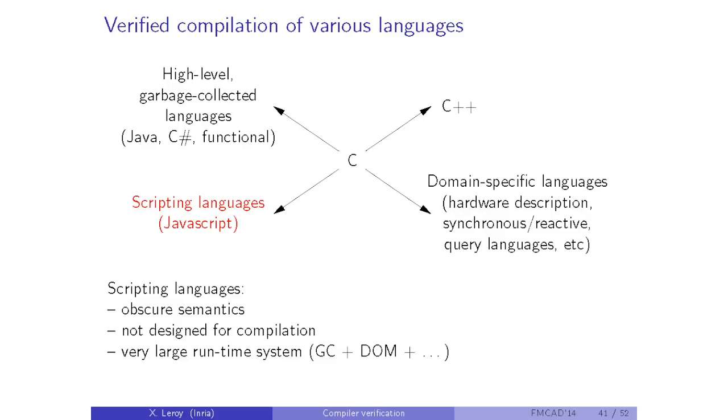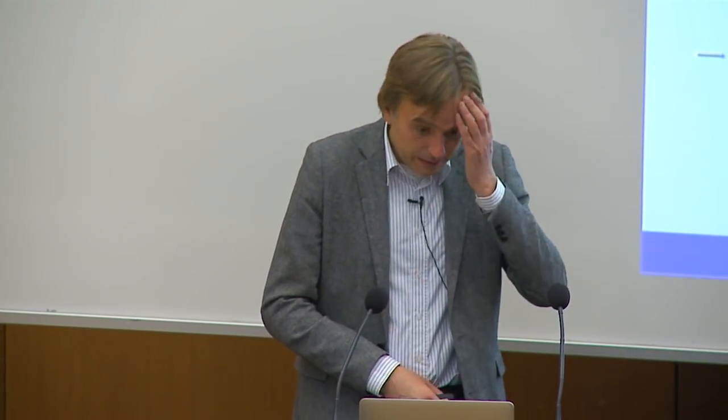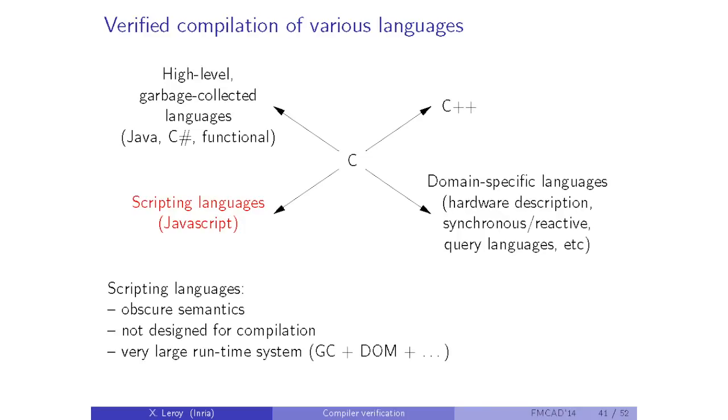Scripting languages like JavaScript are worse: their semantics are obscure, the language was not designed for compilation, and the runtime system is very large — not just a GC but the entire DOM interface with the browser — and nobody really knows how to specify and reason about that yet. Colleagues are close to having a full formal semantics for JavaScript in Coq and are validating it by testing, but verifying compilation remains a much bigger challenge.